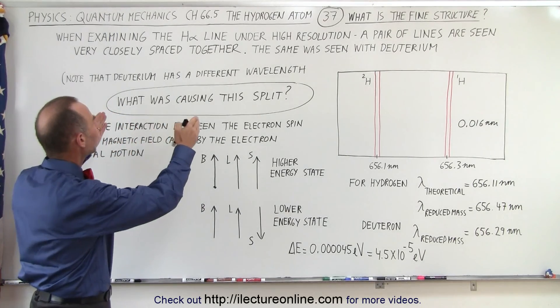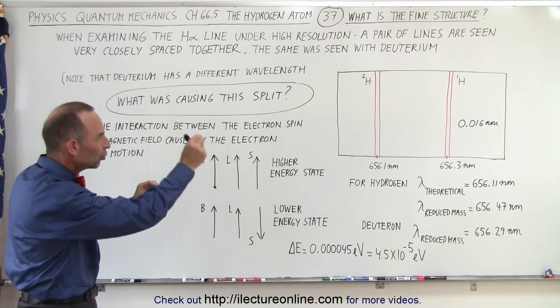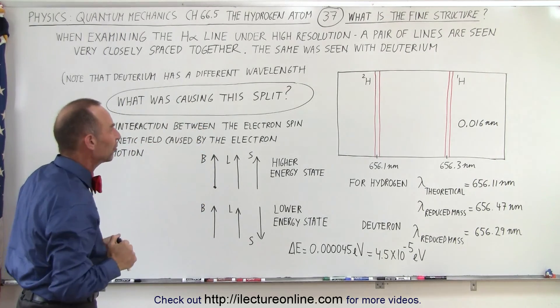So what is causing this split? Why do we see those two very fine lines very closely spaced together?